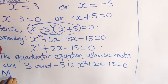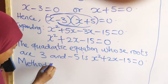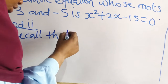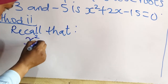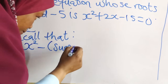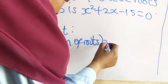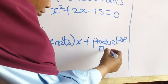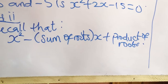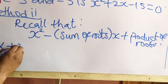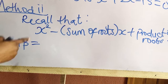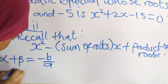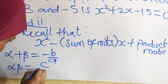The second method is to use the formula method. Recall that a quadratic equation can be formed from: x squared minus (sum of roots) multiplied by x plus (product of roots) equals 0. Where sum of roots equals alpha plus beta, which equals minus b over a, and product of roots equals c over a.